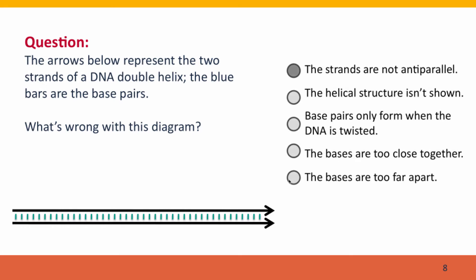What's wrong with this figure is that the two strands are not shown as being anti-parallel. The two arrows indicate that the two strands are going in the same direction, as if we had the three prime ends of both of them together and the five prime ends of both of them together. This is a structure that's physically not possible.